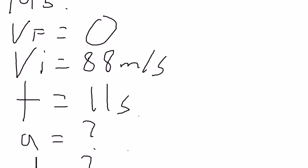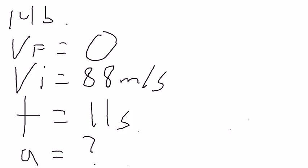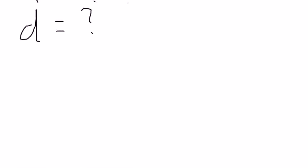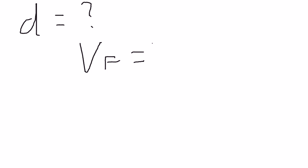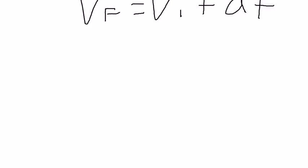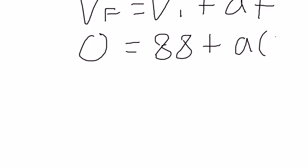After listing out, we write down the equation for finding the acceleration, which is final velocity equals initial velocity plus acceleration times time. I'll just plug it in. The final velocity is zero equals 88 plus acceleration times 11 seconds.